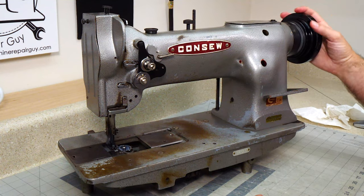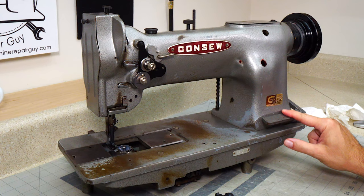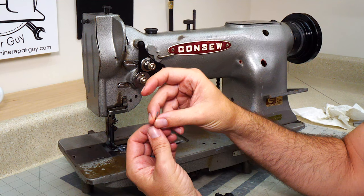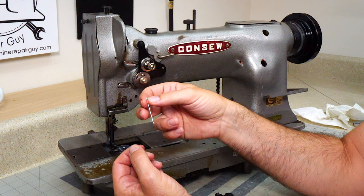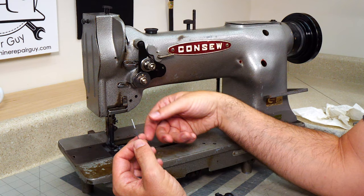Now when you're replacing a needle on one of these, this is a Konso 226. The shank is round, so you have to figure out what direction to point your needle in. That's very important for these machines because if you face your needle in the wrong direction, your machine will not pick up the bobbin thread.